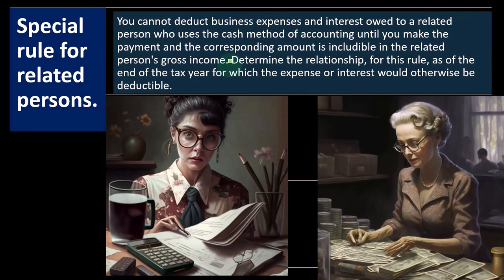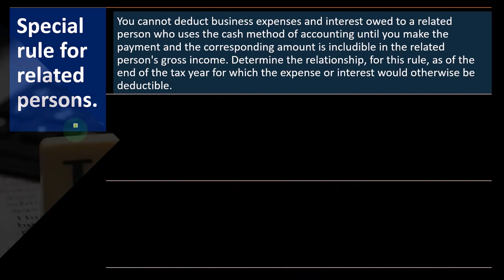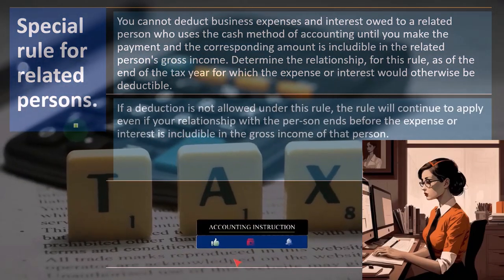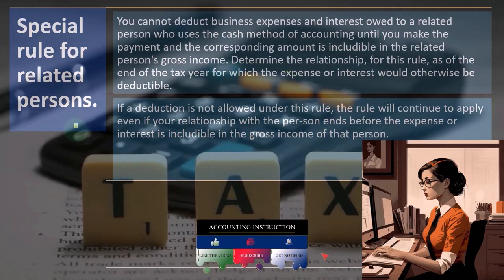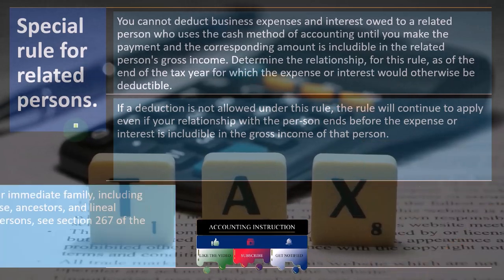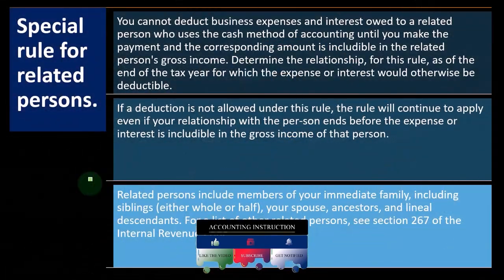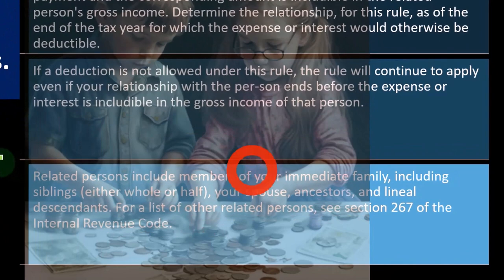To determine the relationship for this rule, assess it as of the end of the tax year for which the expense or interest would otherwise be deductible. If a deduction is not allowed under this rule, the rule will continue to apply even if your relationship with the person ends before the expense or interest is included in that person's gross income. Related persons include members of your immediate family — including siblings (whole or half), your spouse, ancestors, and lineal descendants. Related transactions are obviously going to be viewed skeptically by the IRS.